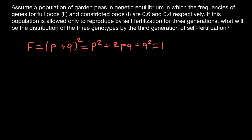All three genotypes combined equal one, or 100%. In our case, capital F is the dominant allele and small f is the recessive allele, giving us three genotypes: homozygous dominant, heterozygous, and homozygous recessive.